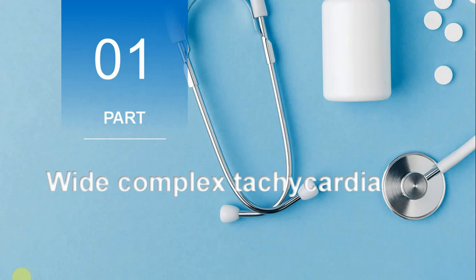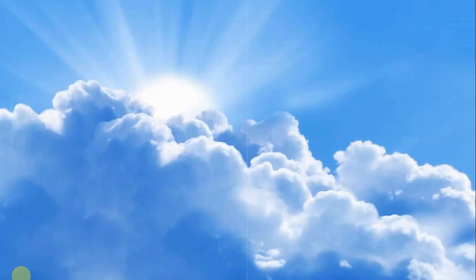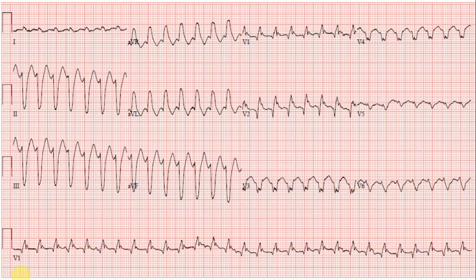Let me show you an ECG from a patient we saw a few months ago — a 72-year-old who came in with palpitations. As you can see, there are wide QRS complexes that are pretty regular, with a ventricular rate of about 200 beats per minute and a right bundle branch block appearance. We diagnosed this patient with VT and treated accordingly; the patient ended up having a pacemaker/AICD and is doing well.